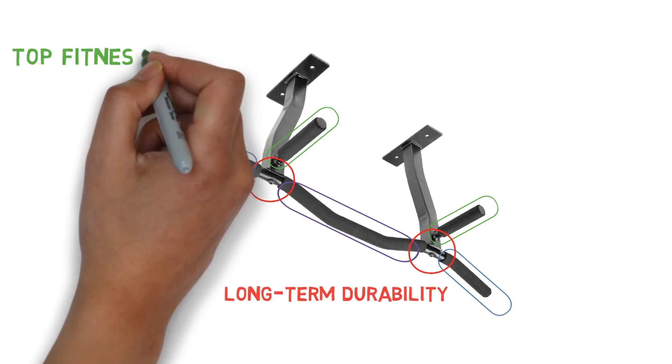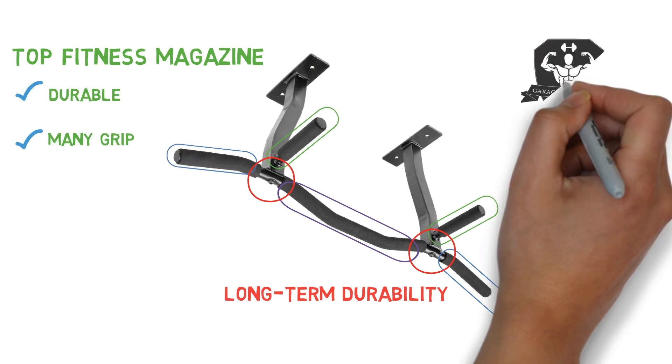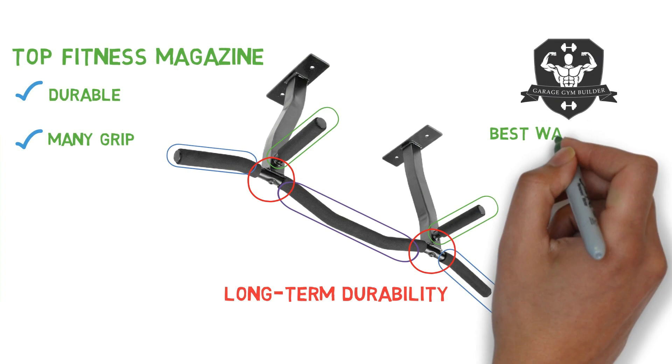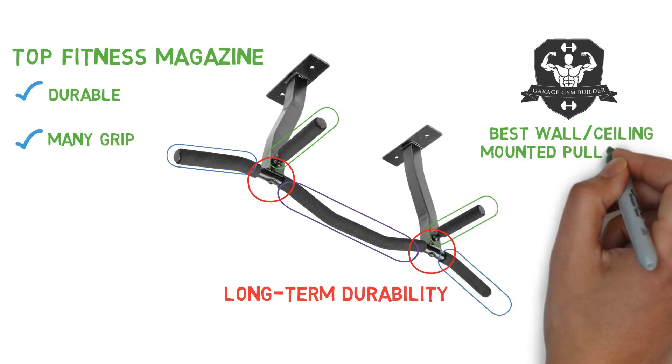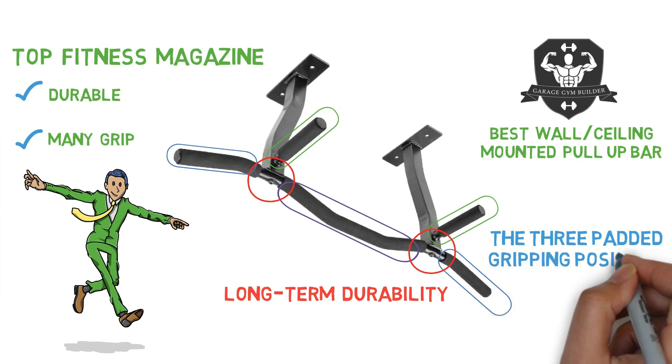On the other hand, Top Fitness magazine found this bar to be quite durable and also liked the many grip options. Lastly, Garage Gym Builder ranked this as the best wall-slash-ceiling-mounted pull-up bar regardless of cost. Again, the reviewers were fans of the three padded gripping positions.